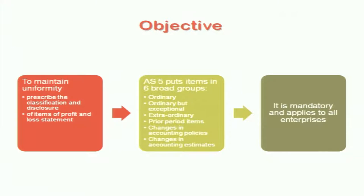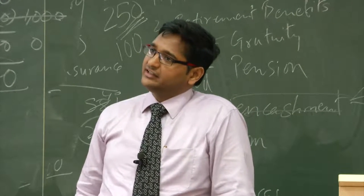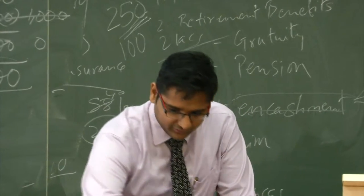The objective of AS5 is to maintain uniformity year on year, and to prescribe the classification and disclosure — how to classify items and how to disclose each item. AS5 puts items into six broad categories: ordinary; ordinary but exceptional; extraordinary; prior period; changes in policies; and changes in estimates. This standard is mandatory and applies to all enterprises.